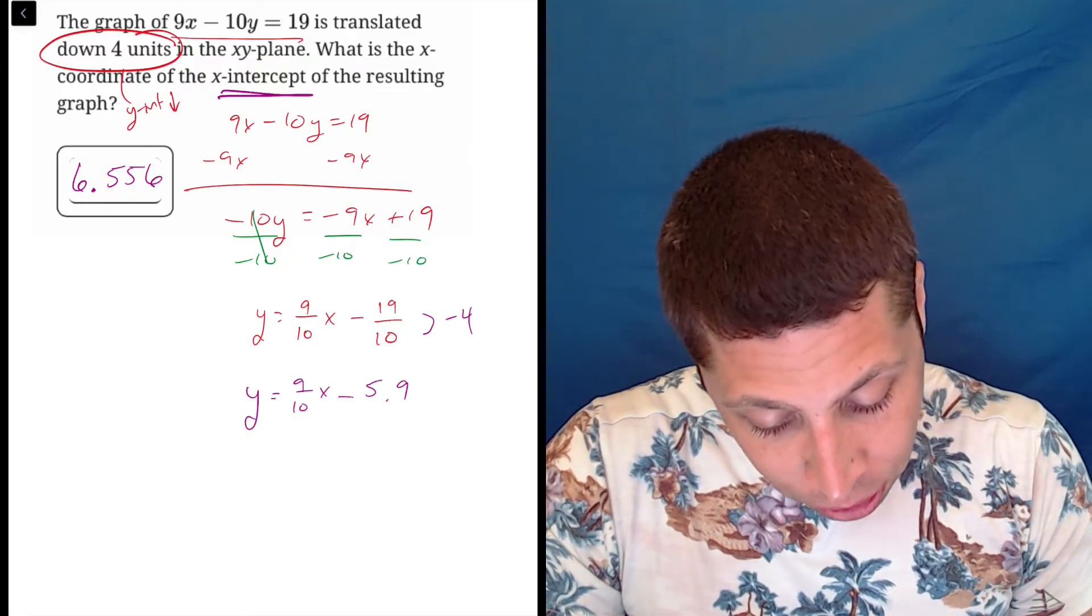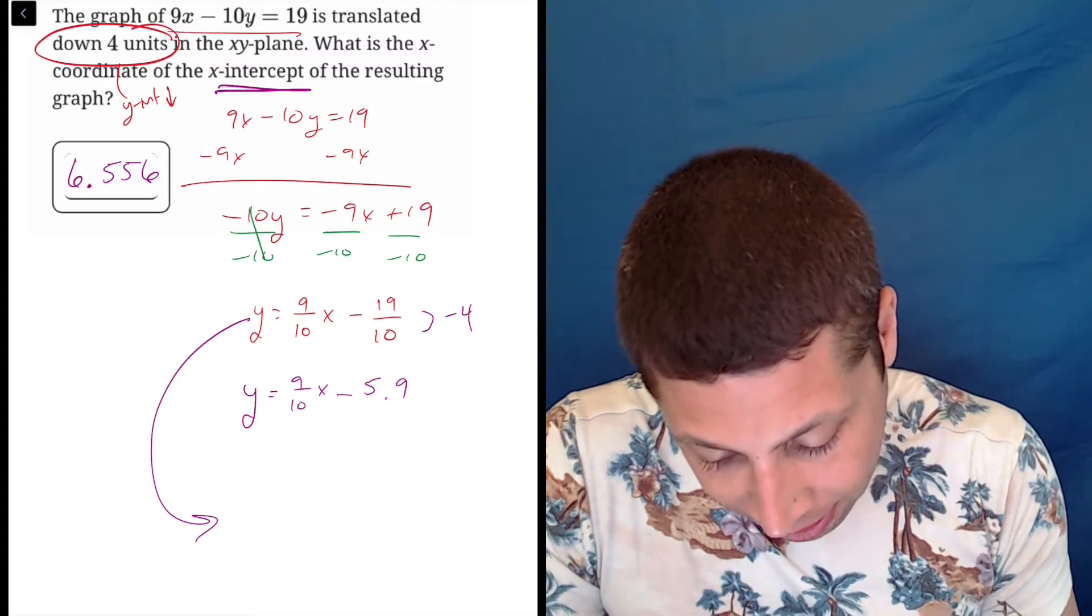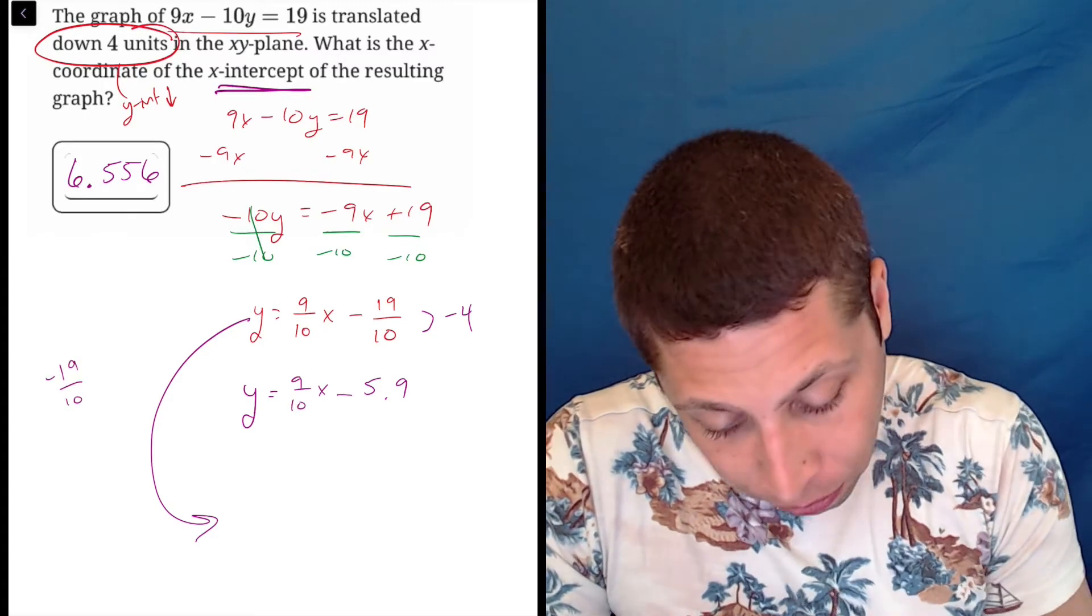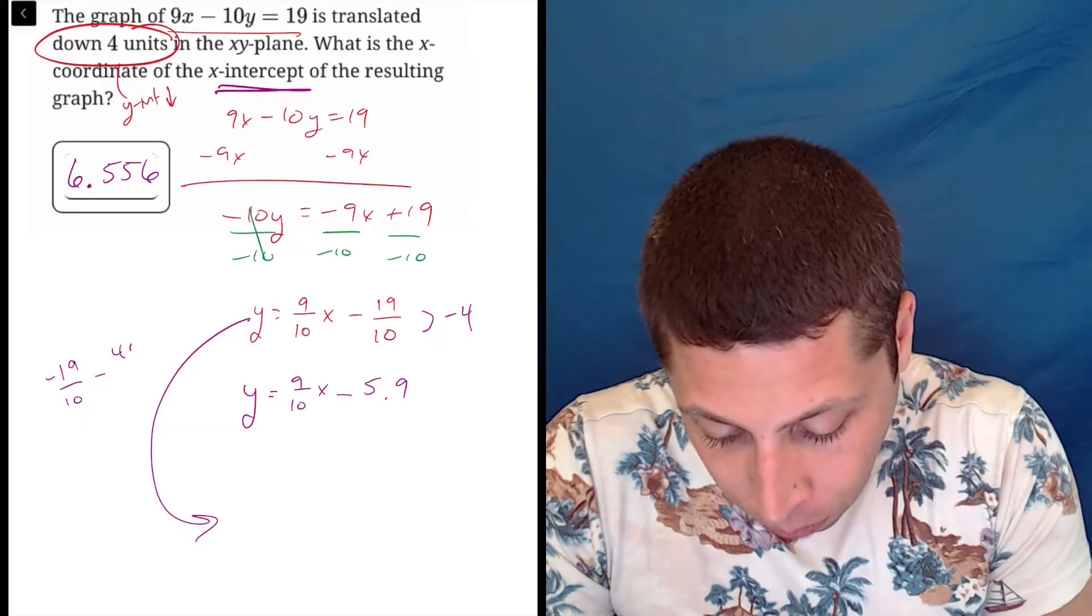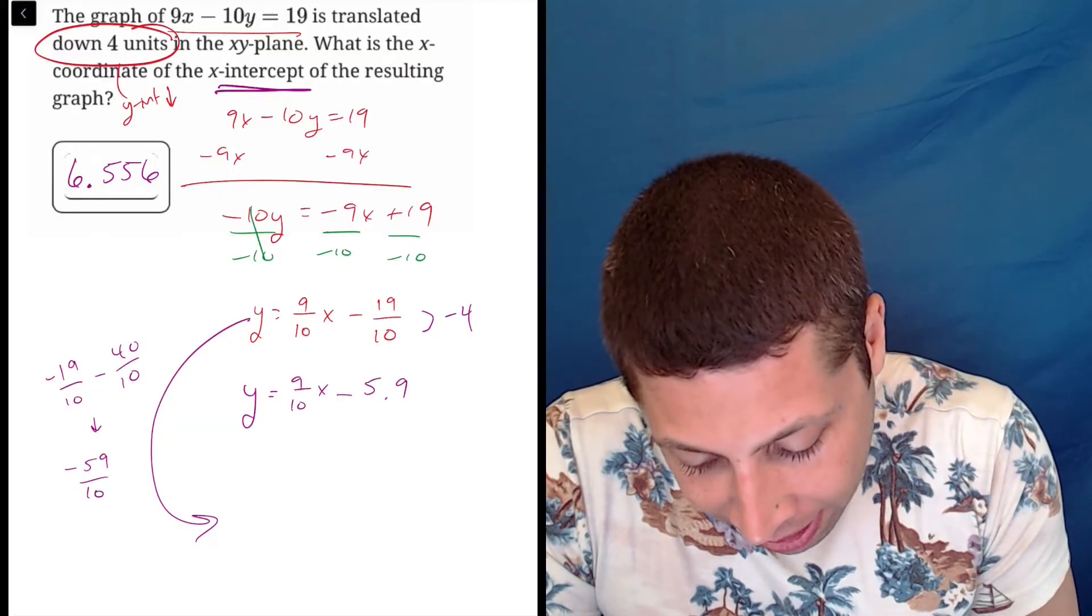So if I kind of go back here and do negative 19 tenths, and subtract 4 from that, so that's minus 40 tenths, then this becomes negative 59 tenths.